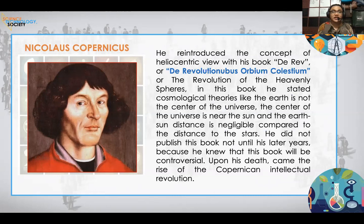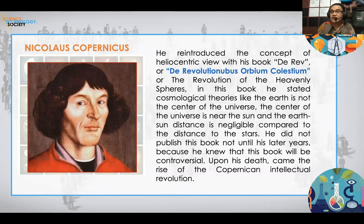In his cosmological theories, he stated that the Earth is not the center of the universe, that the center is near the sun, and that the Earth–sun distance is negligible compared to the distance to the stars. He did not publish this book until his latter years because he knew it would be controversial. Upon his death came the rise of the Copernican Intellectual Revolution.